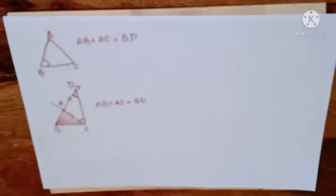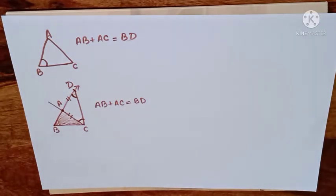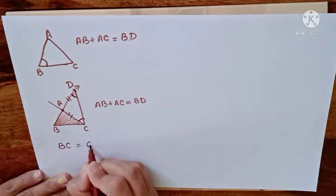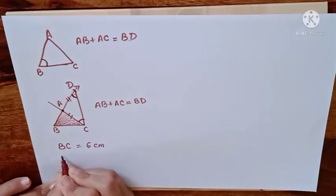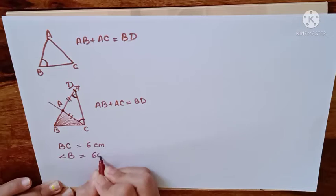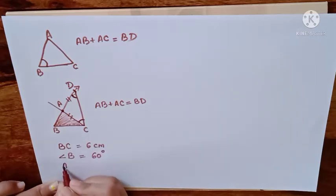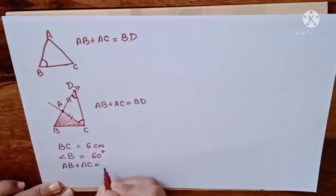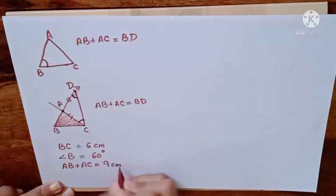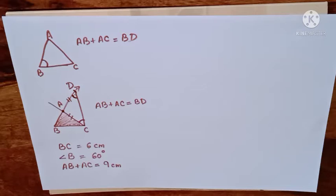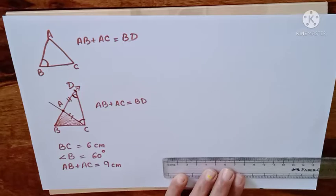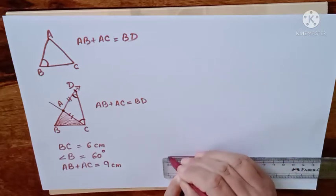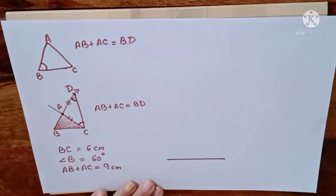Let us do this construction. The given measurements are: BC is 6 cm, angle B is 60 degrees, and the sum of two sides AB plus AC is 9 cm. For this construction, start with the base — draw BC which is 6 cm, and mark the points as B and C.